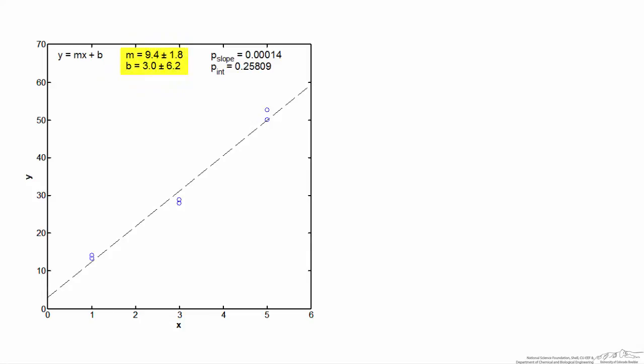When you run a linear regression analysis, these are probably the most useful parameters you'll get out of it. You'll do a least squares fit for the slope — in this case it's 9.4 — and the intercept is 3.0. I've also included 95% confidence intervals for both the slope and the intercept. You might want to take a look at the previous screencast where I talk in more detail about what these confidence intervals actually mean. What I want to talk about in this screencast is the meaning of the p-values that you'll calculate for both the slope and the intercept.